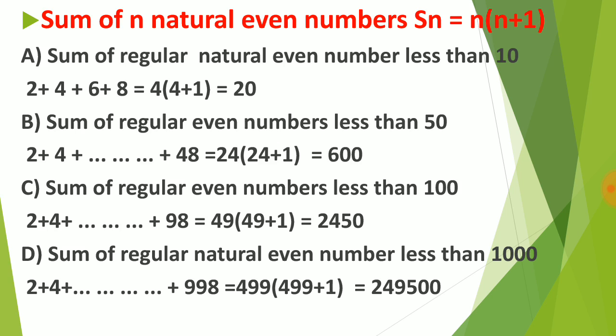For even numbers, the formula for the sum of first n even numbers is n(n + 1). If we add regular even numbers less than 10, the answer is 20; but if we add up to 10, the answer is 30 — so we need to take care of 'less than' versus 'up to'. The sum of regular even numbers less than 50 is 600, because there are 24 even numbers and the formula gives 24 × 25. The sum less than 100 is 2450, and less than 1000 is 249,500.